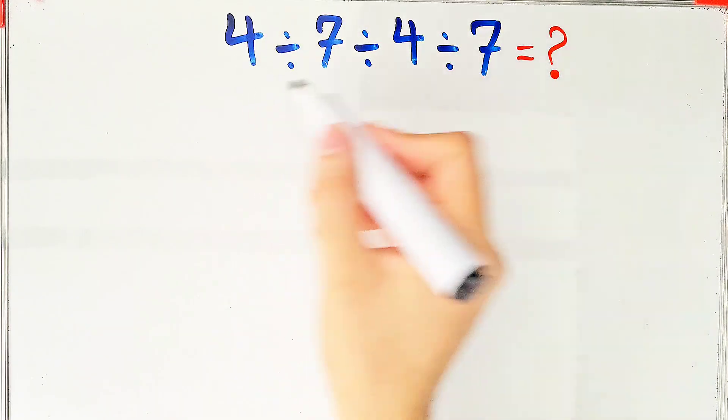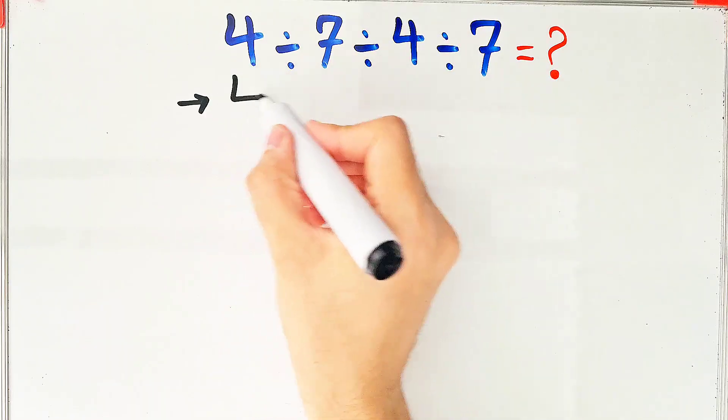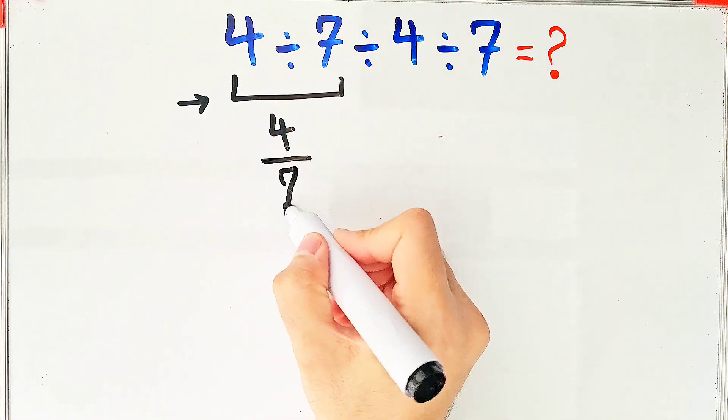Let's solve this question step by step together. Because we have 3 divisions, we start from the left and simplify the question.